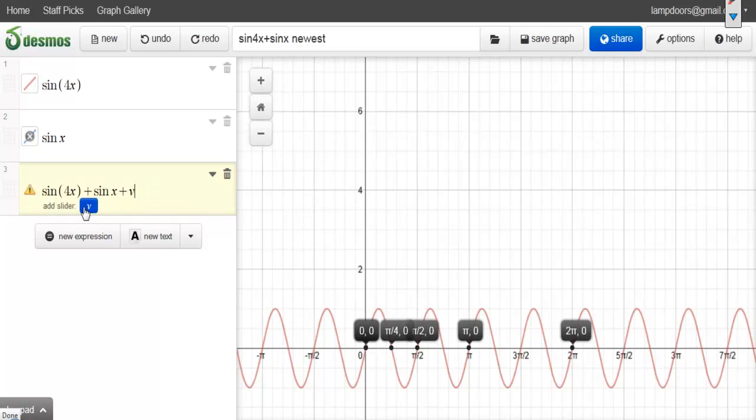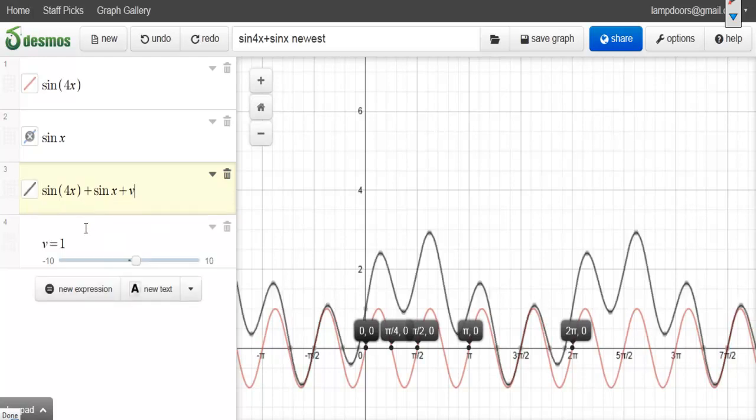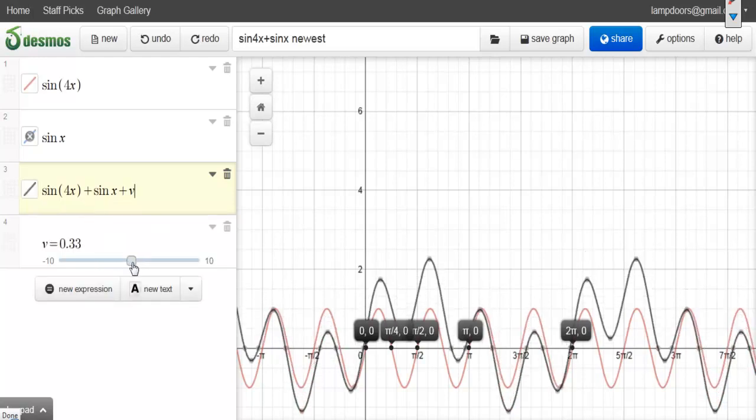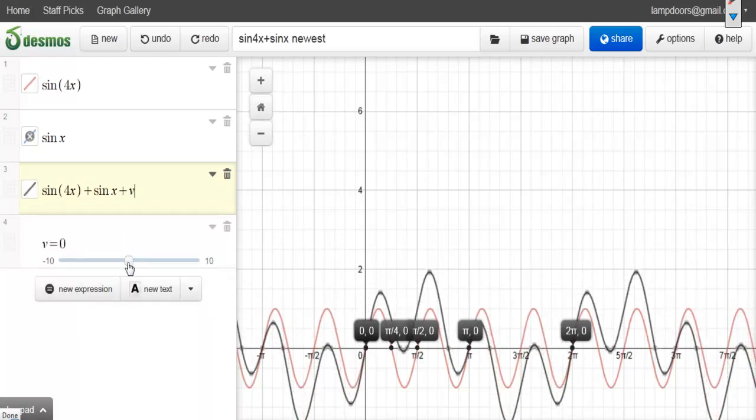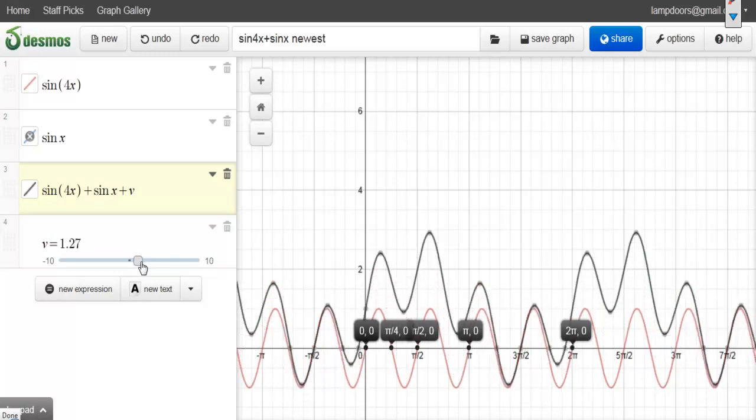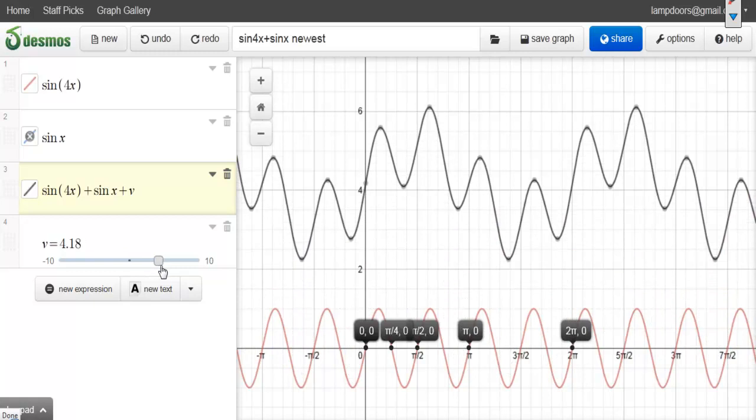And then it'll ask you if you want to add a slider. And you can start the slider at 0. And if we want to bring it up to 5, then you'll actually see the graph move until we get to 5.